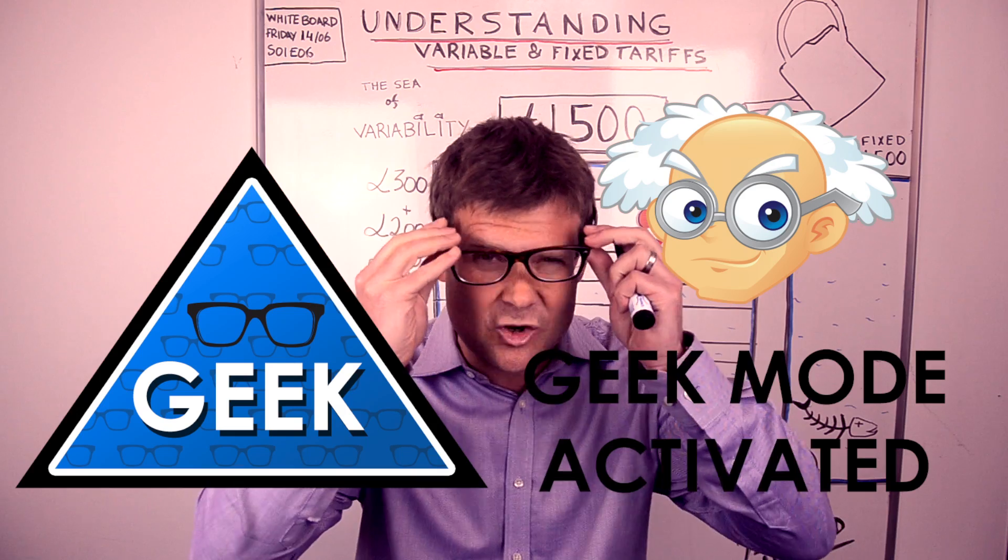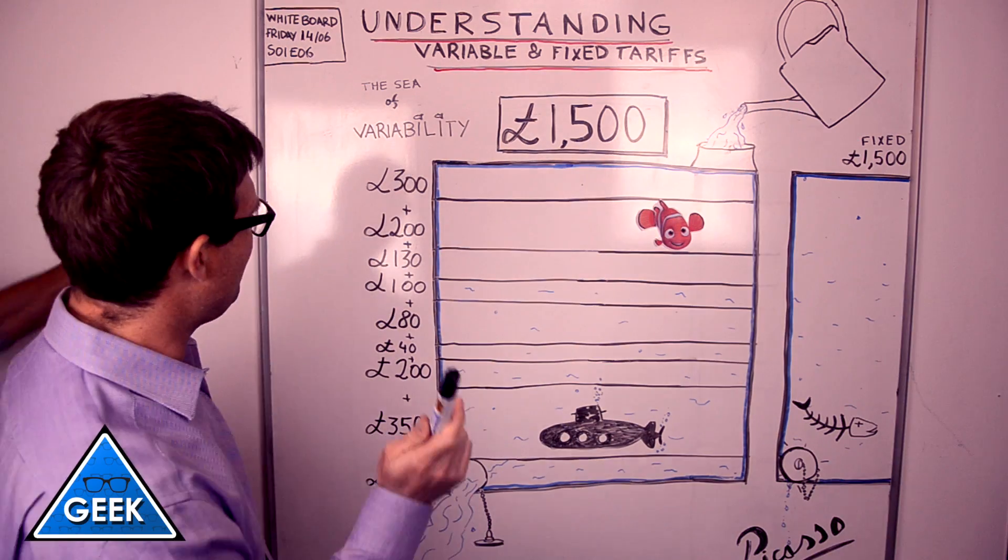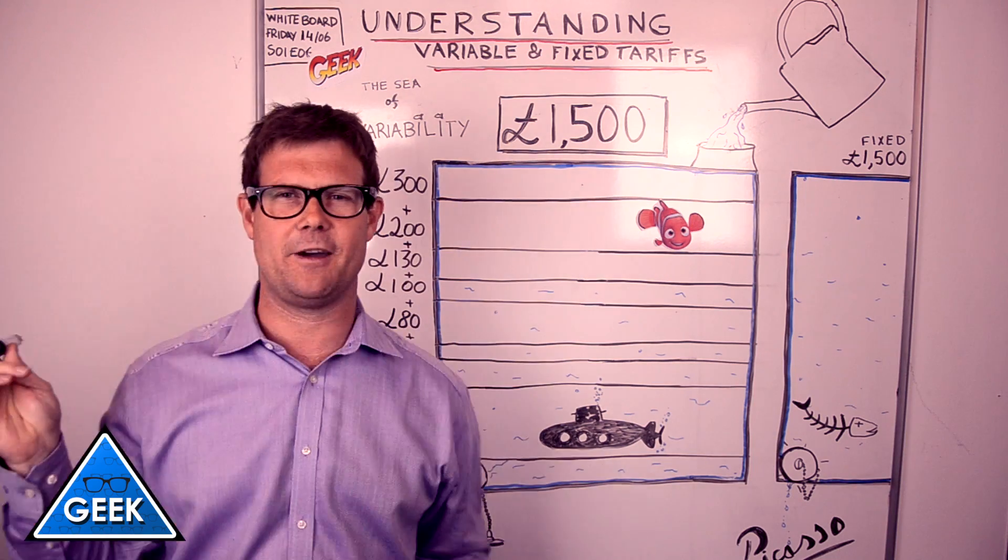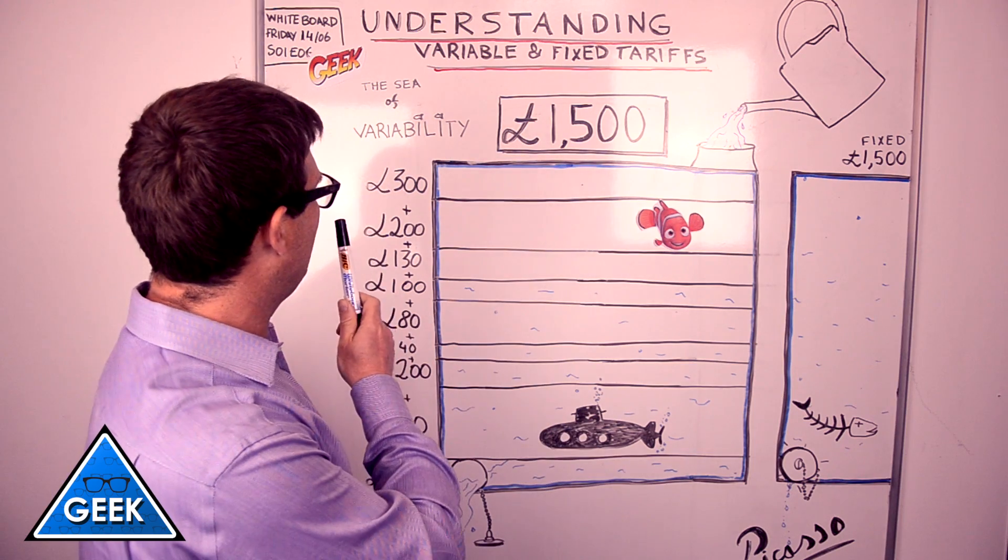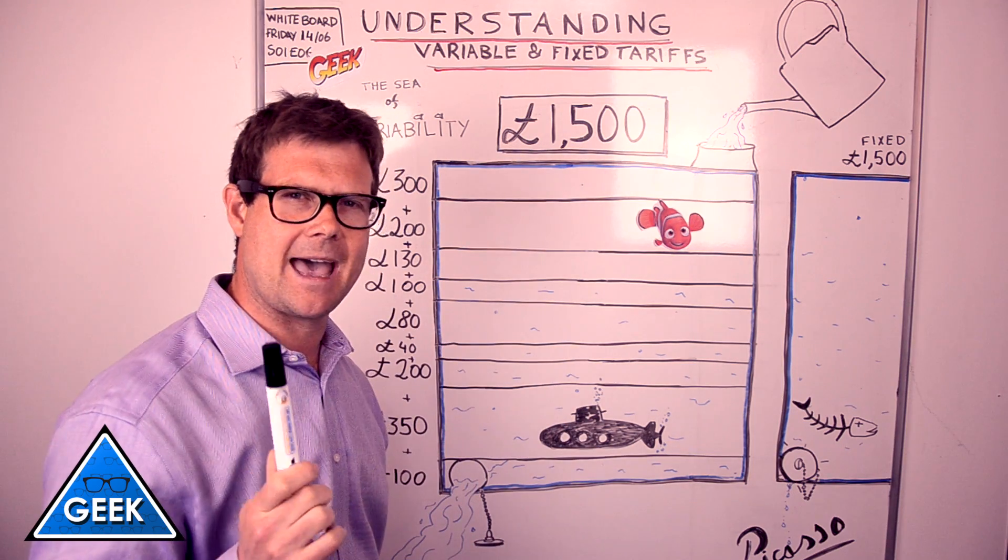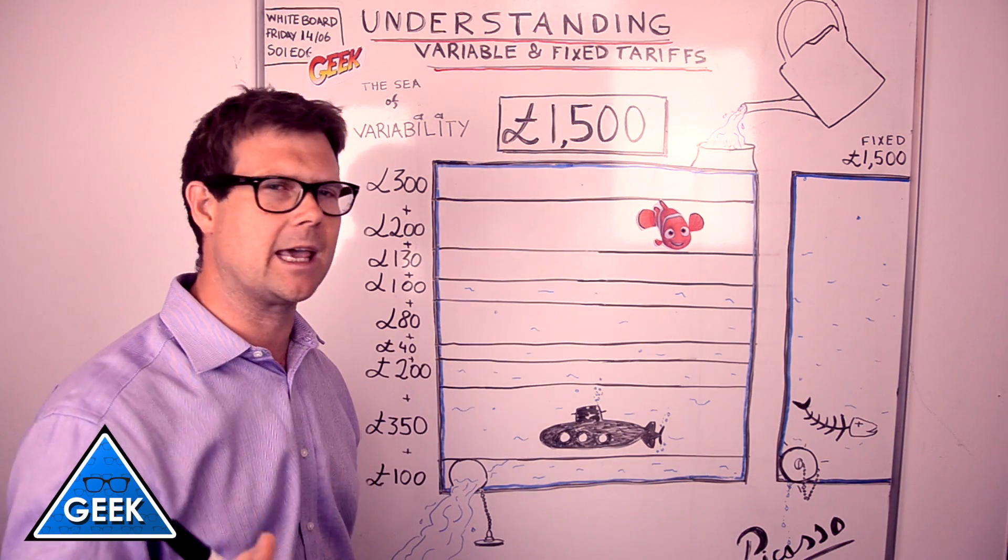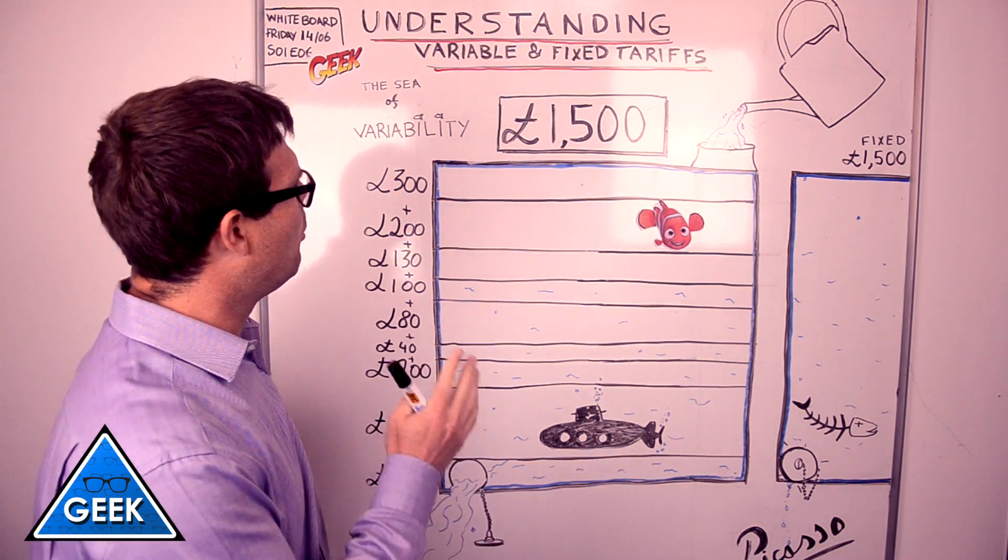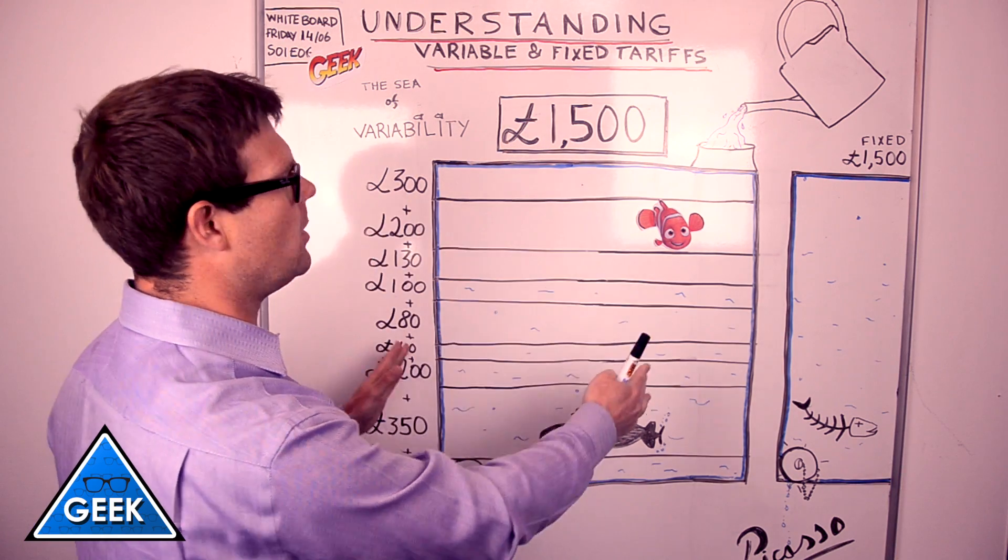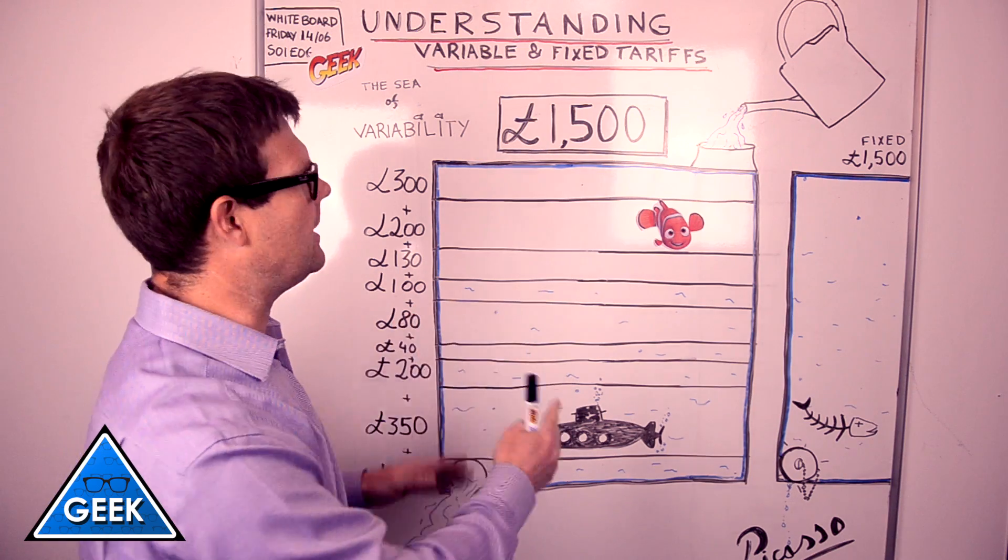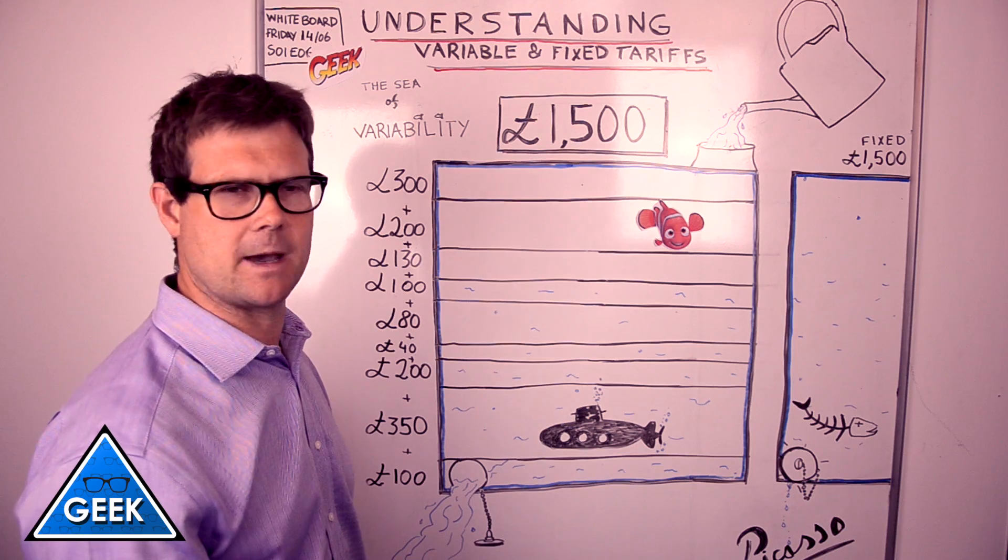Never let me say we don't treat you all. Here we go. So in geek mode we are. Now Trump, our faithful assistant, has once again stuck up a quality geek insignia there for you. Now trying to describe how hedging works, which is what this is, is in fact very difficult. Trying to get analogies that work is quite complicated. What we've decided on in the end is to basically say, right, let's pretend that this tank of water represents £1,500 worth of energy that you use on an annualized basis.